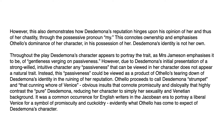The candidate refines the critical position. Othello proceeds to call Desdemona 'a strumpet' and 'that cunning whore of Venice' — obvious insults connoting promiscuity and disloyalty — highly contrasting with the pure Desdemona, reducing her character to simply her sexuality and Venetian background. Subtly bringing in AO3 context. It was a common occurrence for English writers in the Jacobean era to portray a liberal Venice as a symbol of promiscuity and cuckoldry — evidently what Othello has come to expect of Desdemona's character.